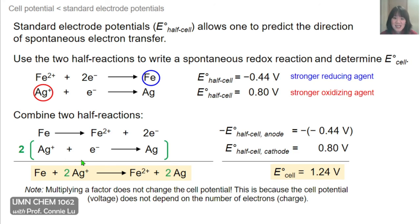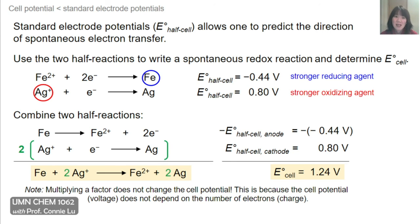A factor of 2 was needed to write the overall redox reaction; however, that factor of 2 does not affect the cell potential, because cell potentials do not depend on the number of electrons or charge transferred. In the next section, we will see that the energy of the redox reaction depends on both the cell potential and the charge — that is, the number of electrons transferred.